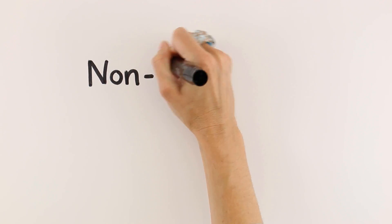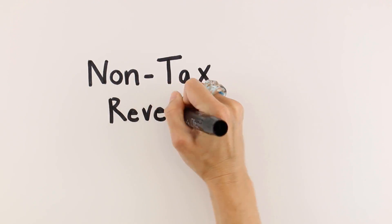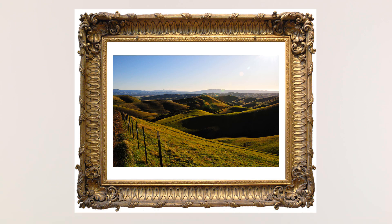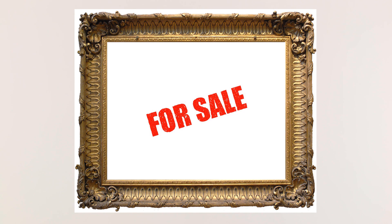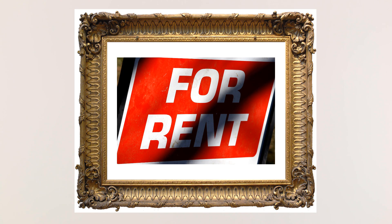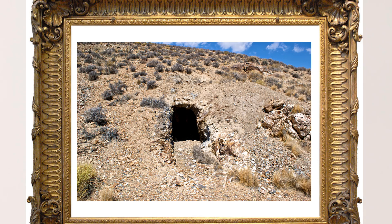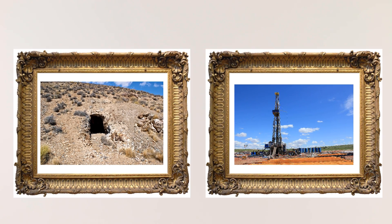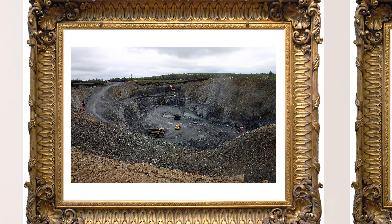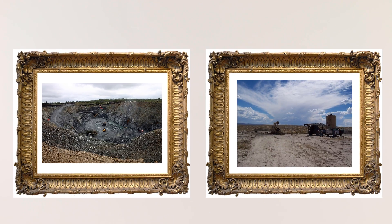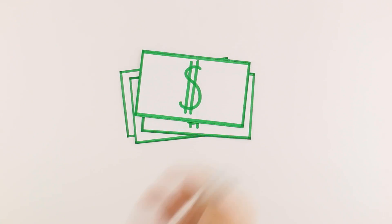Aside from taxes, the federal government raises revenue in a variety of other ways. For example, oftentimes the government owns land that it no longer needs or uses. Sometimes they will sell this property, but usually they will rent or lease this land to make more money in the long term. The federal government may own land that contains mines or oil, and they can rent or lease this land to companies that want to dig mines or drill for oil.